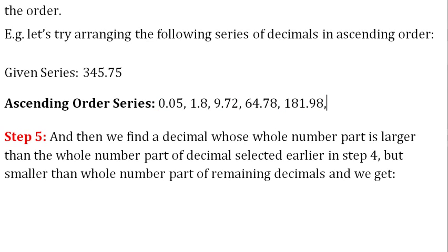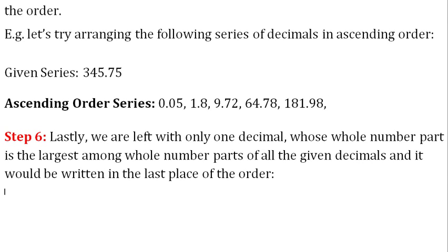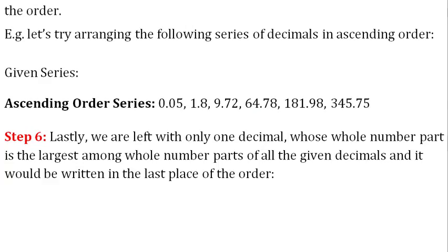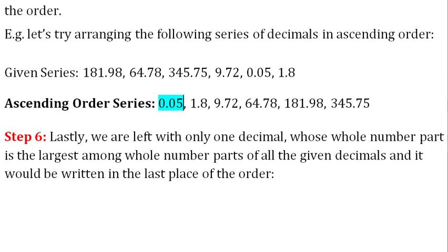Step 6: At last we are left with only one decimal whose whole number part is the largest among the whole number parts of all the given decimals, and it would be written at the last place of the order. Decimal 345.75 has whole number part 345, the largest among all given decimals. So 345.75 is written at the last place, and we get the complete series: 0.05, 1.8, 9.72, 64.78, 181.98, 345.75.